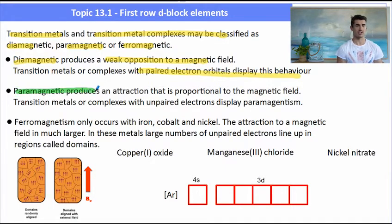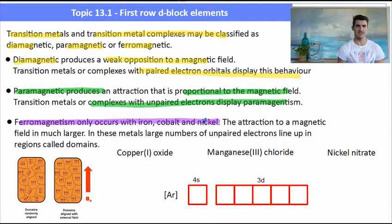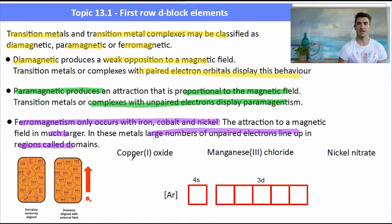Paramagnetic produces an attraction that is proportional to the magnetic field strength, so it is attracted. Transition metal complexes with unpaired electrons display paramagnetism. Ferromagnetism only belongs to iron, cobalt and nickel and it is because these domains, these sections of the crystal lattice, they all align due to large numbers of unpaired electrons. So in iron, cobalt and nickel those domains can line up with the field and it produces a much stronger attraction to the magnetic field.